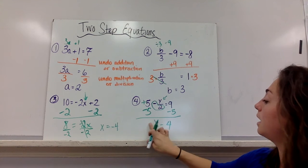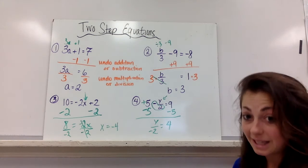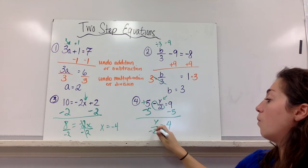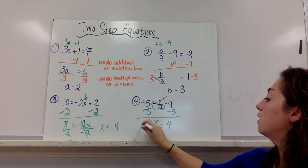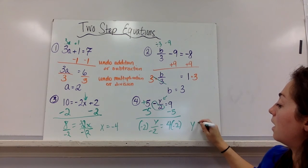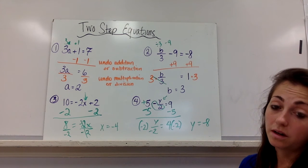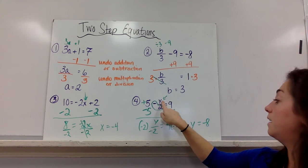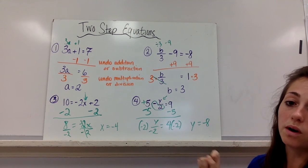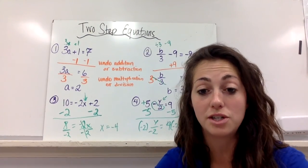Now if I move that negative so it's with the 2, it's going to make it less steps—only two, and that's what we want. So then I have y divided by negative 2 equals 4. If I multiply by negative 2, I get y equals negative 8. And you can plug that in to be certain. That's a really good idea. Negative 8 divided by 2 is negative 4. 5 minus negative 4 is like 5 plus 4, which is 9. And that's two-step equations.